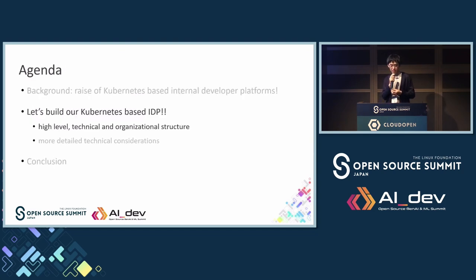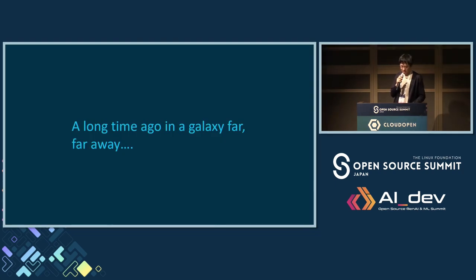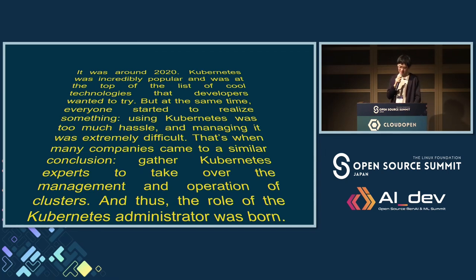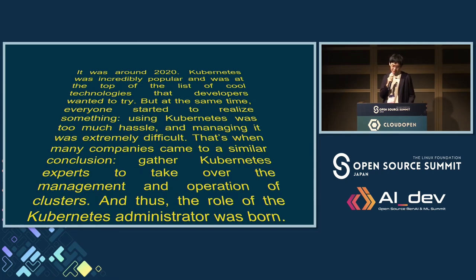This is the second section. Let's get into the high-level technical and organizational structure. I'd like to share a little bit of history — a long time ago in a galaxy far, far away — it was around 2020. Kubernetes was incredibly popular and was at the top of the list of cool technologies that developers wanted to try. But at the same time, everyone started to realize something: using Kubernetes was too much hassle, and managing it was extremely difficult.